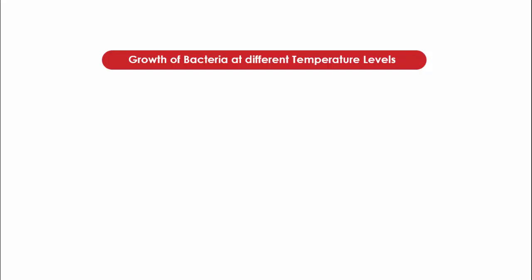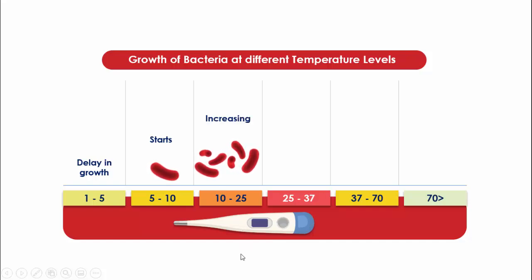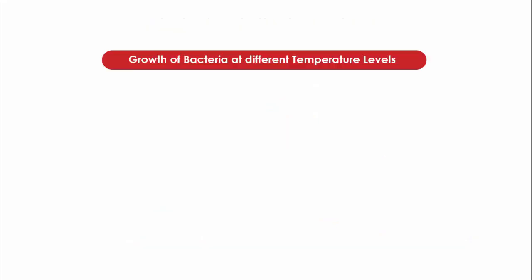This is the title I've given. When I click, different temperature levels appear starting from 1 to 5 up to greater than 70 degrees, and I've placed a thermometer image there. When I click the first one — delay in growth — there is no bacteria. When the temperature rises to between 5 to 10 degrees, bacteria starts increasing. From 10 to 25 it increases further, with bacteria images teetering. Between 25 to 37 it reaches the optimum level. From 37 to 70 degrees it starts slowing down, shown with an animation. Above 70 degrees it will die. You can see the clear difference when comparing the original slide to this one.